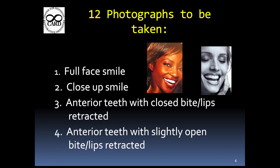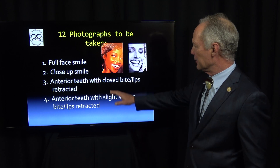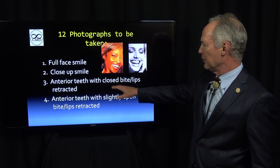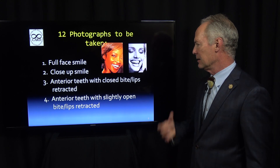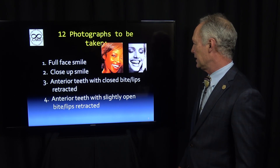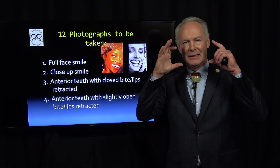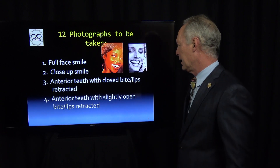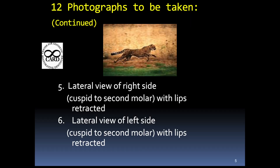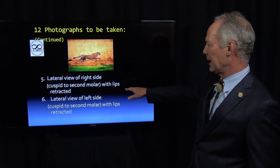This is not a cell phone, this is not a Polaroid — this is a high-end diagnostic camera. These photographs have got to be outstanding. So these are the 12 photographs to be taken: the full face smile, the close-up smile just of the smile, the anterior teeth with closed bite and lips retracted, teeth together, and the anterior teeth slightly open bite with lips retracted so you can see if the teeth are worn or chipped in the anterior. A lateral view of the right side, cuspid to second molar with lips retracted.